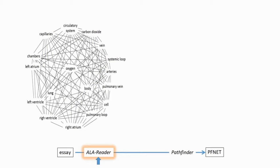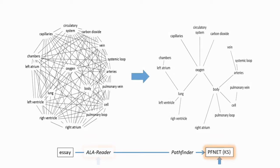However, as texts get longer and more complex, the ALA-reader approach is likely to over-specify keyword relations. That is why I applied PFNet to search for the strongest, most direct path between the keywords. The result has only the most salient linkage between keywords in the text. I also call this network the knowledge structure of the text, as I did in the sorting pattern.